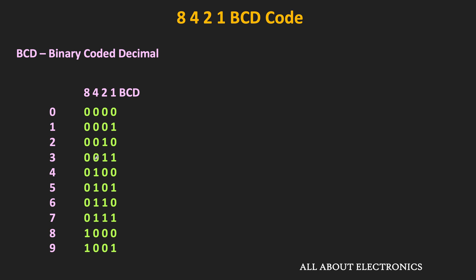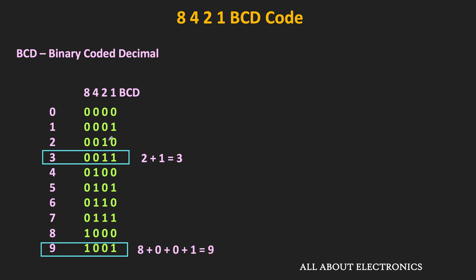For example, if we take this BCD code 0011, then there is a 1 in the position of 2 and 1. These two 1s will get multiplied by their corresponding weight, and the summation of all these weights represents the equivalent decimal number. Similarly, if we see this code 1001, then there is a 1 in the position of 8 and 1. So if we do the summation of all these weights, then it is equal to 9. That means this is the decimal equivalent number represented by this particular code.